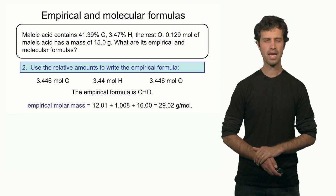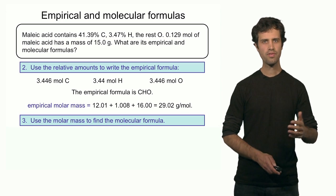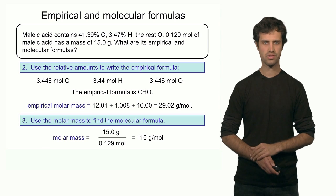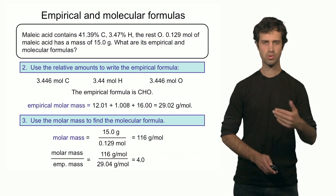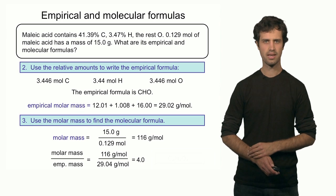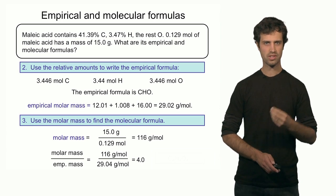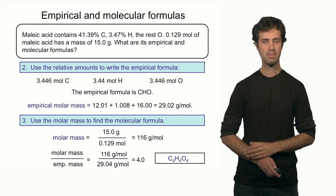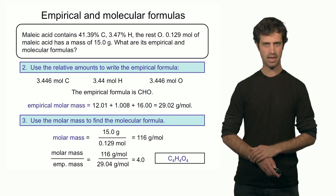Let's see what the actual molar mass is. We can calculate that from the extra information: 15 grams contains 0.129 moles, so 15 divided by 0.129 gives a molar mass of 116 grams per mole. The empirical molar mass and the actual molar mass are not the same. The ratio between the two is 116 divided by 29, which is almost 4. So 4 times more mass in the molar mass than in the empirical mass, which means I need to multiply the empirical formula by 4. That means the molecular formula is C4H4O4.